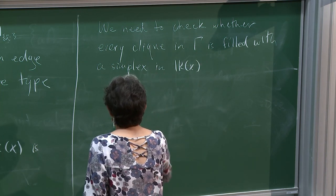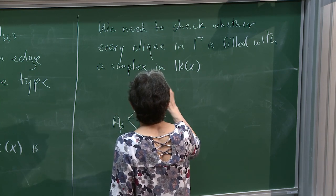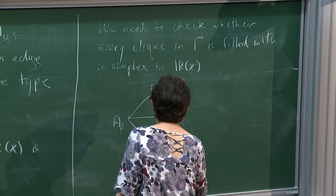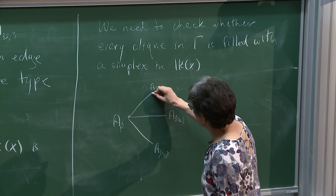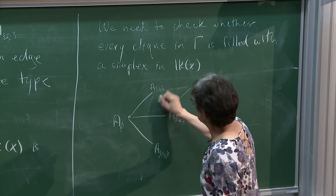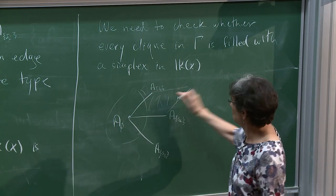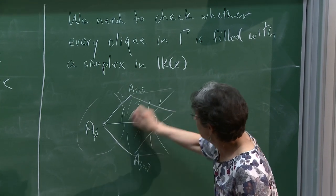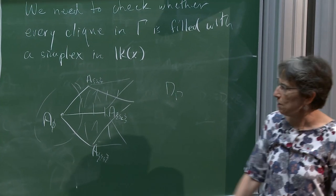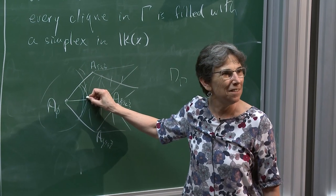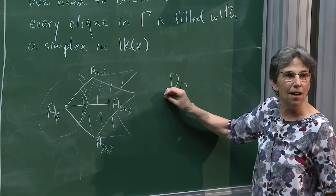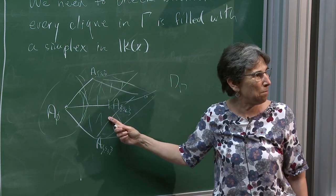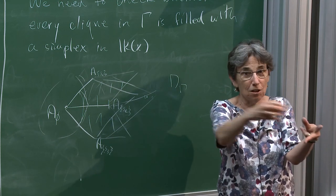We need to check whether every clique in γ is filled with a simplex in this link. Let's draw one with three vertices forming a clique — A(s₁), A(s₂), A(s₃) — and figure out if it gets filled in. There must be cubes for each pair. But that just forms a triangle; I want to know if it's filled in. To fill that in, this whole picture has to live in some cube — there has to be a three-dimensional cube spanned by those three edges.